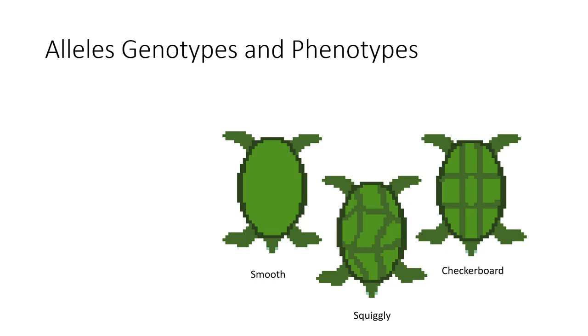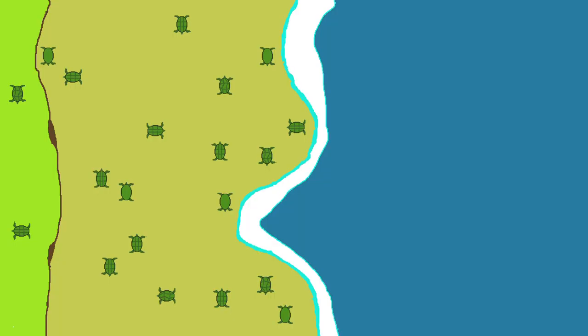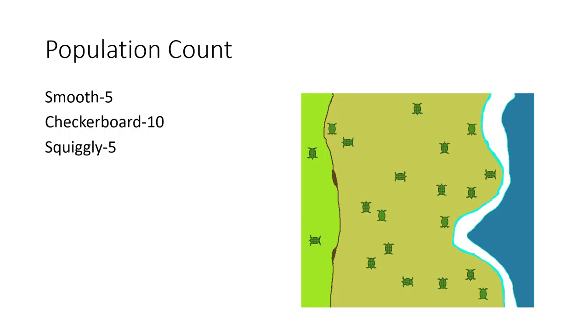These are the alleles that correspond to these phenotypes, and this is the gene frequency of the overall population. We can see that these sea turtles here make up a population of 20, and we can count their phenotypes and the corresponding genotypes.